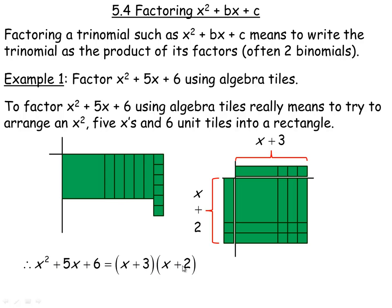Notice these numbers 3 and 2 are special numbers that relate to the 5 and the 6 this way: the 5 is the sum of 3 and 2, and the 6 is the product of 3 and 2. That's the method you use algebraically to do this without algebra tiles. These two numbers add to that middle coefficient and multiply to the constant on the end. That's the main algebraic method to factor this.